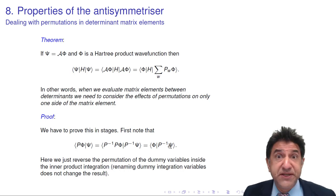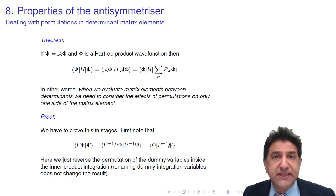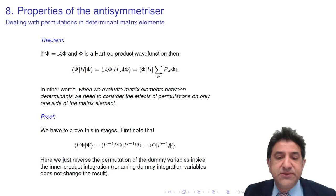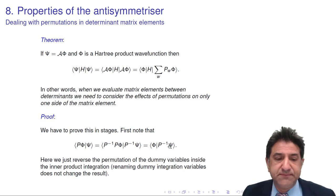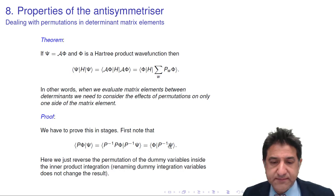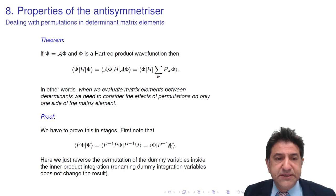The reverse of the permutation is itself — if you do that permutation and you do it again, you will undo that permutation. Or you can think of it as doing it in the opposite direction. So that was pretty easy. Let's keep going.